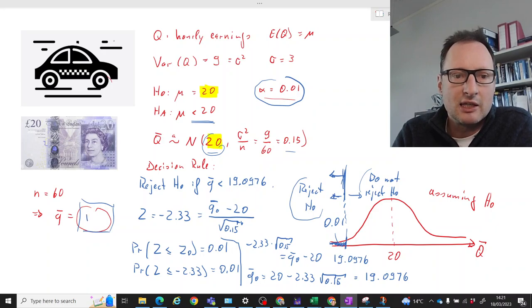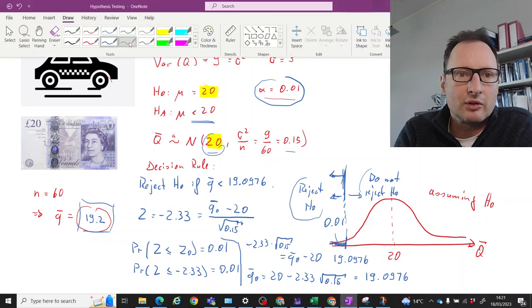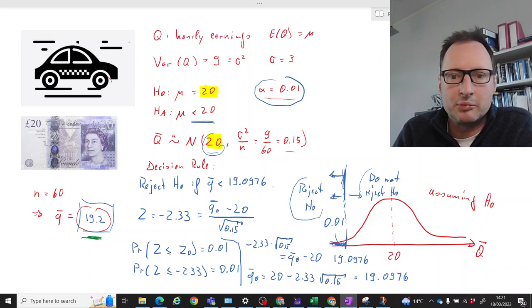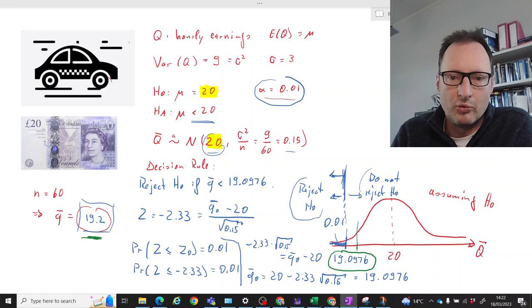Now depending on what the actual sample mean is you will then make your decision. Let's say it is 19.2. 19.2 would be around here. That means in this case we would not reject. Of course if the sample mean was say 18.9 we would be to the left of our critical value and we would reject. So sometimes this value here is called the critical value.